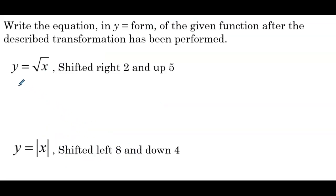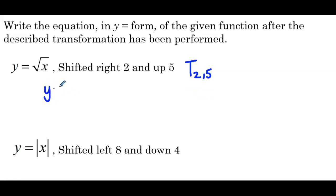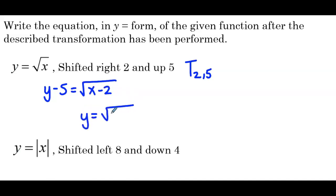Next function is y equals the square root of x, and it's been shifted right 2 and up 5. So here we have both a horizontal and a vertical translation occurring. The translation is right 2, so we're adding 2 to the x's, and up 5, we're adding 5 to the y values. So in the equation, we have to do the opposite — subtract 5 from y, and inside the parent function subtract 2 from x. In y equals form, we'd have y equals the square root of x minus 2 plus 5.